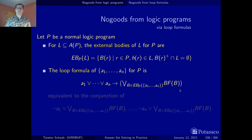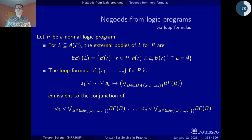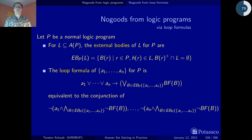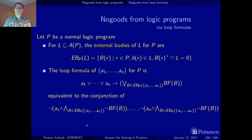We take this implication and translate it just as we've seen in the subsection on no-goods from the completion formula. This is equivalent to the conjunction of disjunctions which say: either an atom in the loop is false, or an external support is true — and this for all atoms in the loop. Applying de Morgan's laws makes things jump to the eye: it cannot be the case that an atom belonging to the loop is true but none of the external bodies has been found to be true — that is, no external support exists — and this for all atoms in the loop.